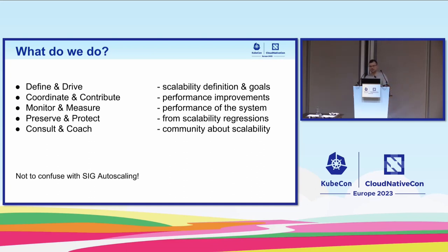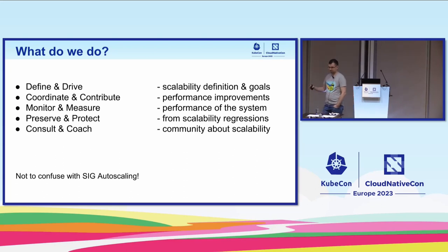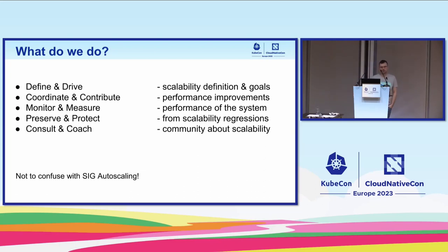One more note: we are at least sometimes confused with the autoscaling SIG, but those are two different things. In SIG Scalability we focus on the overall performance of the system — how far you can push certain limits of Kubernetes. SIG Autoscaling is focused on how to horizontally or vertically scale certain aspects of the system, for example horizontal pod autoscaling or cluster autoscaling. It's sometimes confused by people, but it's not what we are doing in SIG Scalability.